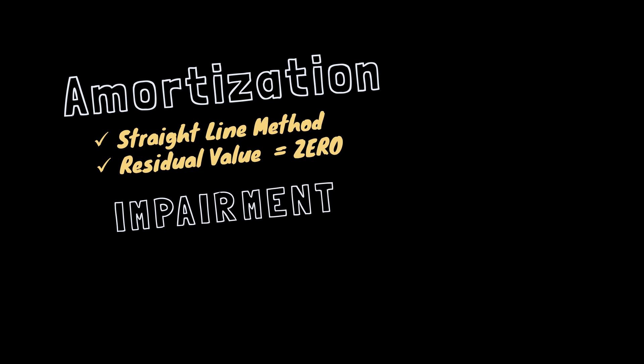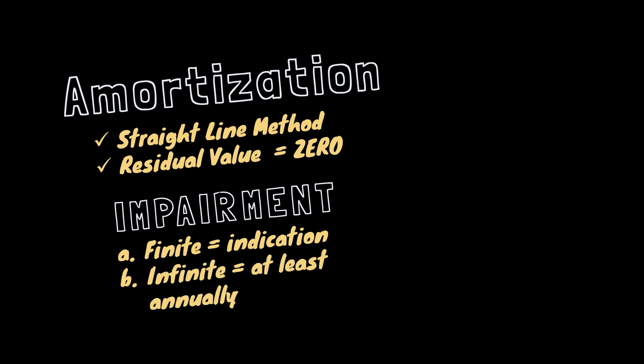The intangible asset is tested for impairment regardless of its useful life. The difference lies in the frequency of testing: if the intangible asset has a finite useful life, it is tested whenever there is an indication of impairment at the end of the reporting period. However, intangible assets with an indefinite useful life are tested for impairment at least annually and whenever an indication of impairment exists.